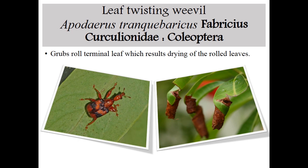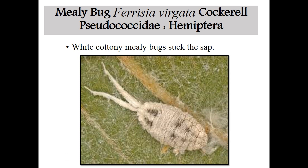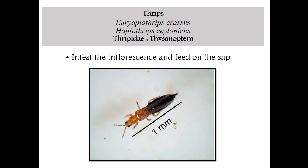Next one is leaf beetle, Podagrica trancobarica, Family Chrysomelidae, Order Coleoptera. Next one is mustard aphid, Aphis craccivora and Myzus persicae — both nymphs and adults suck the cell sap from the surface of leaves, particularly the bottom of leaves, and symptoms of damage are noticed on the upper portion of the leaf as drying and yellowing symptoms. Next one is mealy bug, Ferrisia virgata, Family Pseudococcidae, Order Hemiptera — a two-tailed mealy bug. And last one is thrips, Haplothrips crassus and Haplothrips clunicus, Family Thripidae, Order Thysanoptera. The thrips infest inflorescences and feed on cell sap, as it is an inflorescence feeder.